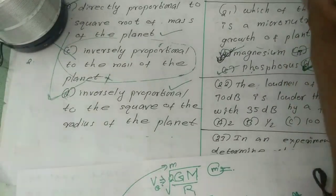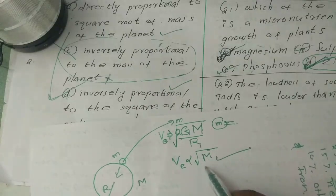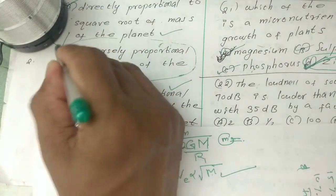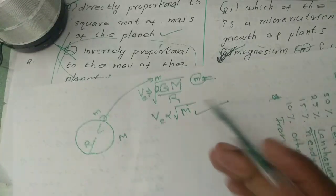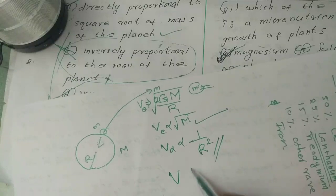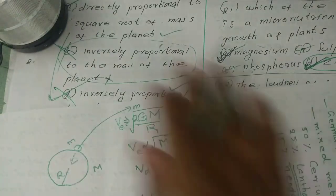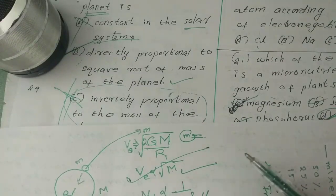Option C is inversely proportional to mass of the planet. Option B is directly proportional to square root of mass of the planet. The third option is inversely proportional to square of the radius of the planet. The answer is equal to square root of mass of the planet.